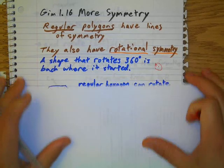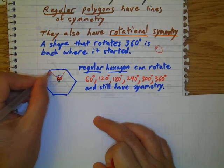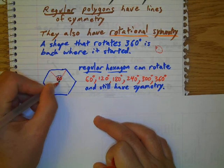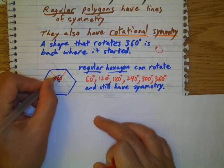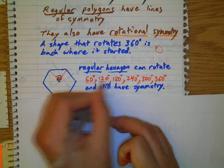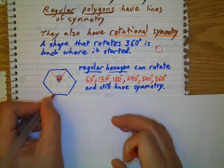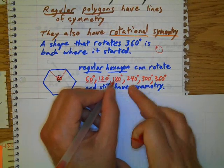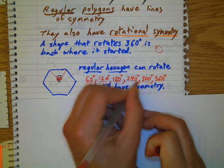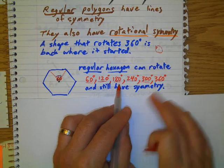So if I've got a regular hexagon, we know that if I rotate it here at 60 degrees then it will be back where it started. But I could also rotate it 120 degrees, 180 degrees would be like a mirror image, and we can keep multiplying, keep rotating it multiples of 60 until we get to 360.